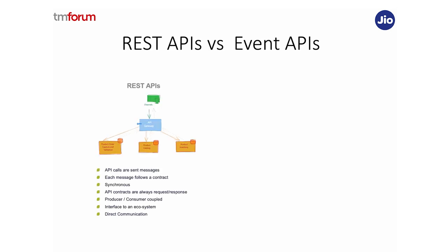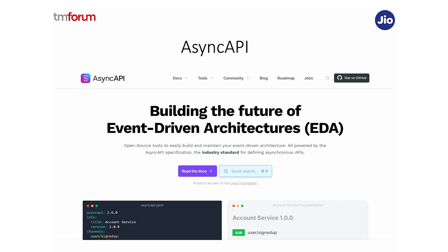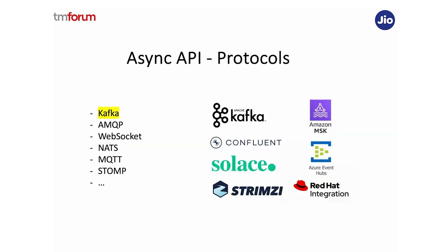You are already familiar with REST, and TMforum provides a lot of REST APIs. But now we've also added support for eventing, which allows us to communicate asynchronously. For this, we are leveraging the Async API, which is an open source project and community helping drive best practices around event-driven architecture. Async API itself is protocol agnostic and supports several different protocols. At TMforum, we have initially started with Kafka, but soon we'll cover other protocols like WebSockets, MQTT, and so on.